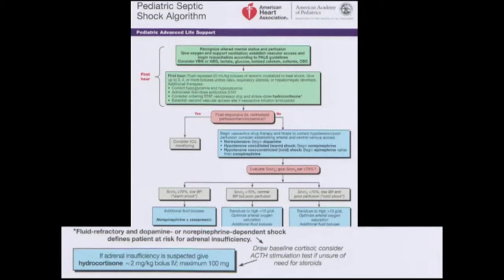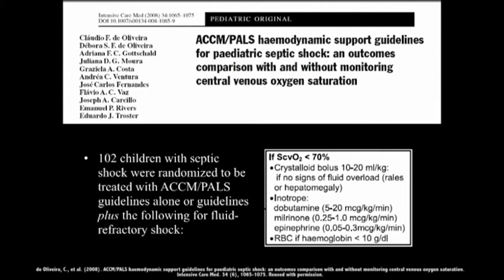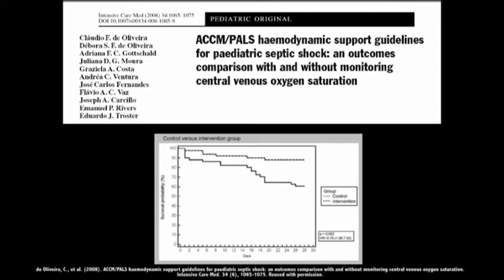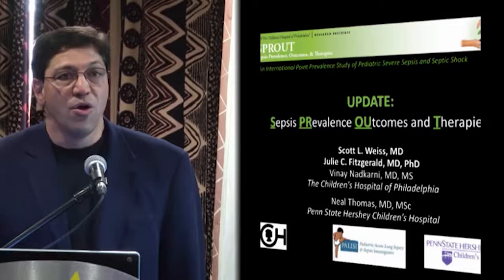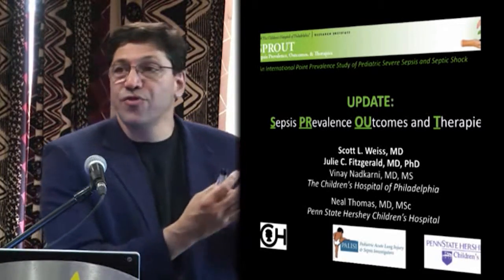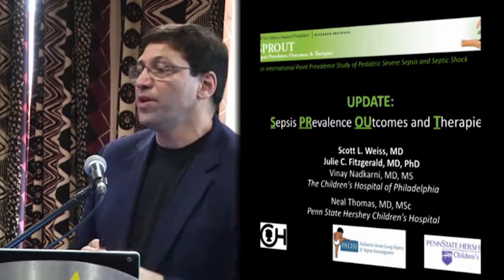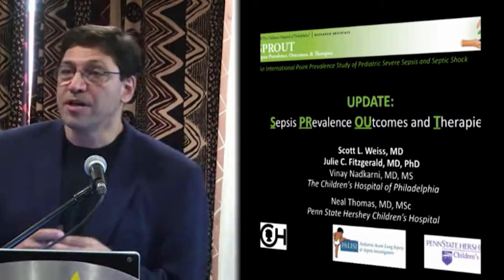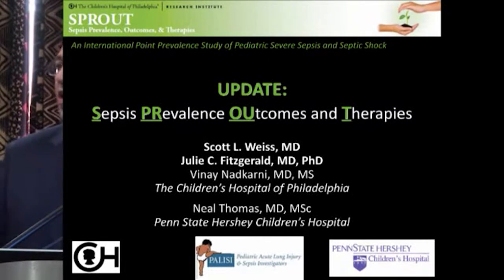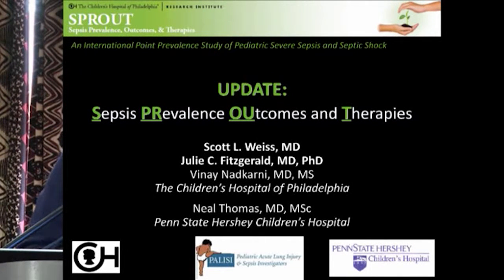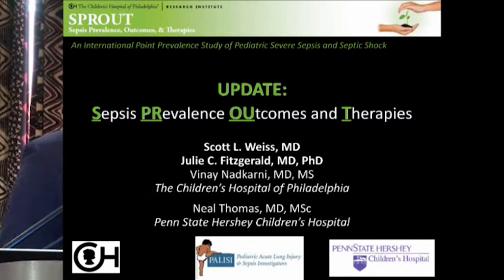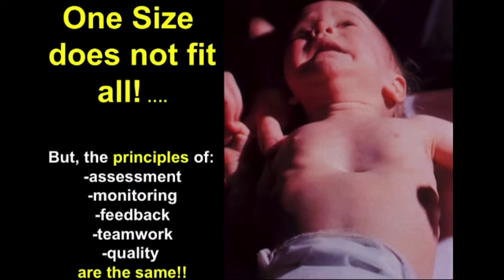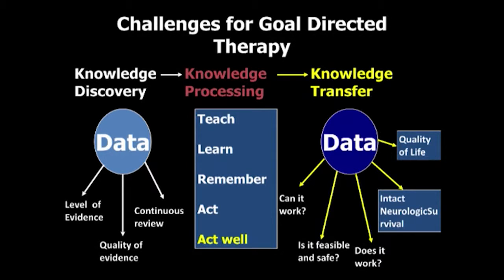There are examples where critical care without walls has been elegantly implemented to affect survival outcome, showing decreased mortality and improved survival when simple measures were implemented effectively. We now have systems — through organizations assessing where septic children are and how they're being managed — to come up with better protocols. The Sepsis Prevalence Outcomes and Therapies Point Prevalence study, promoted through WIFPICS, has been helpful in defining where septic children are, what condition they're in when they arrive in the ICU, and what the course of action is as they leave. One size is not going to fit all, but the principles of assessment, monitoring, feedback, teamwork, quality, and outcome are all the same.